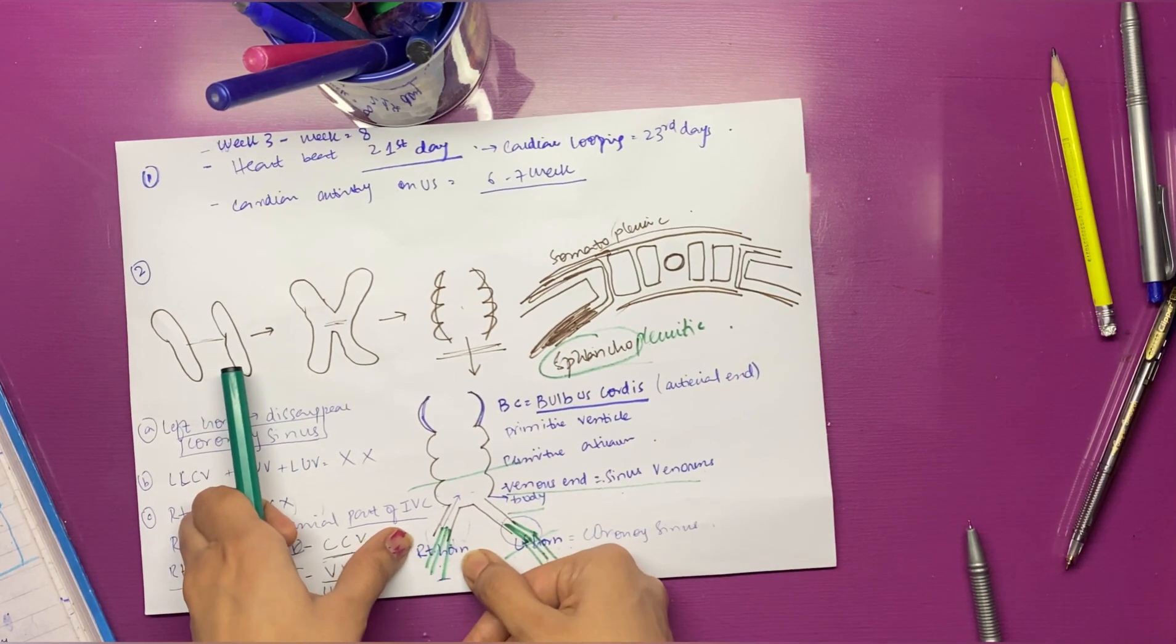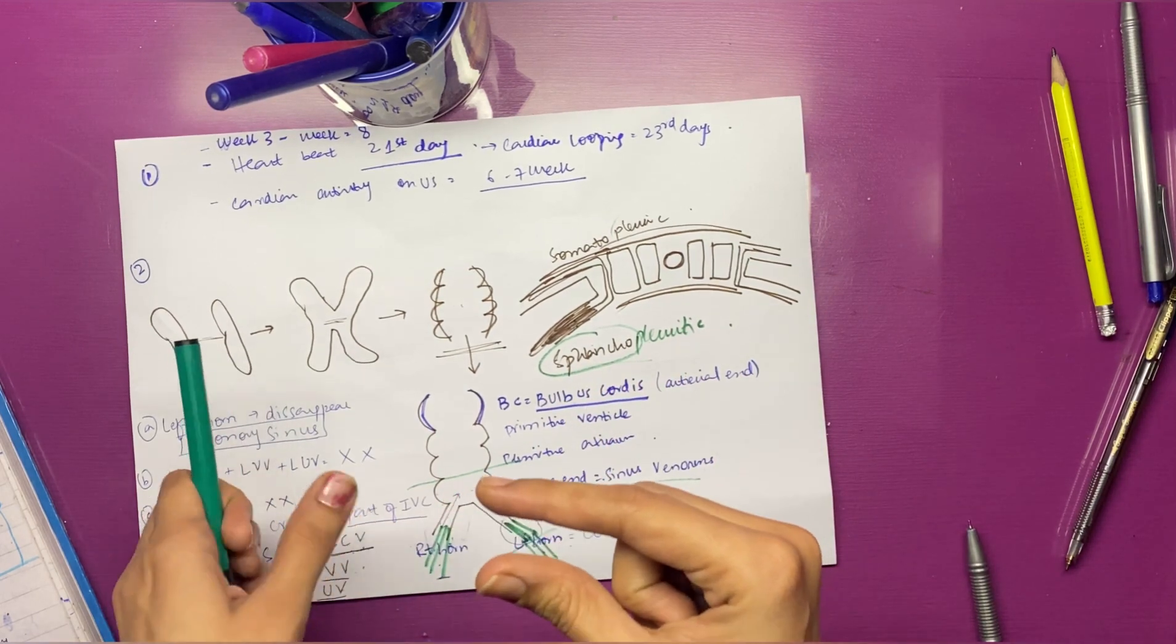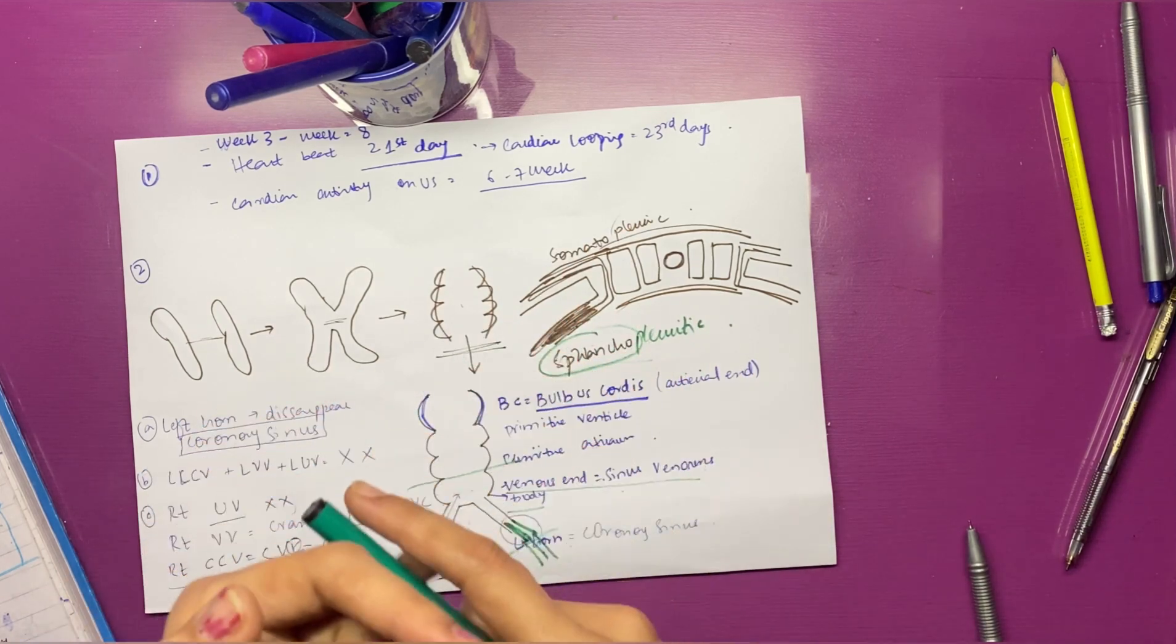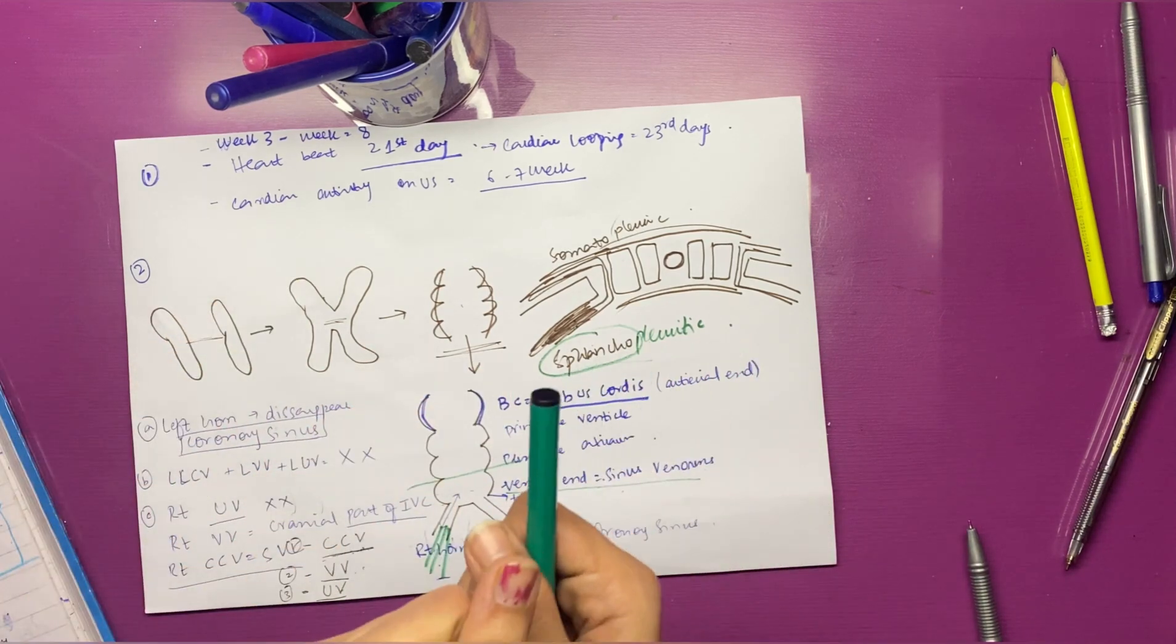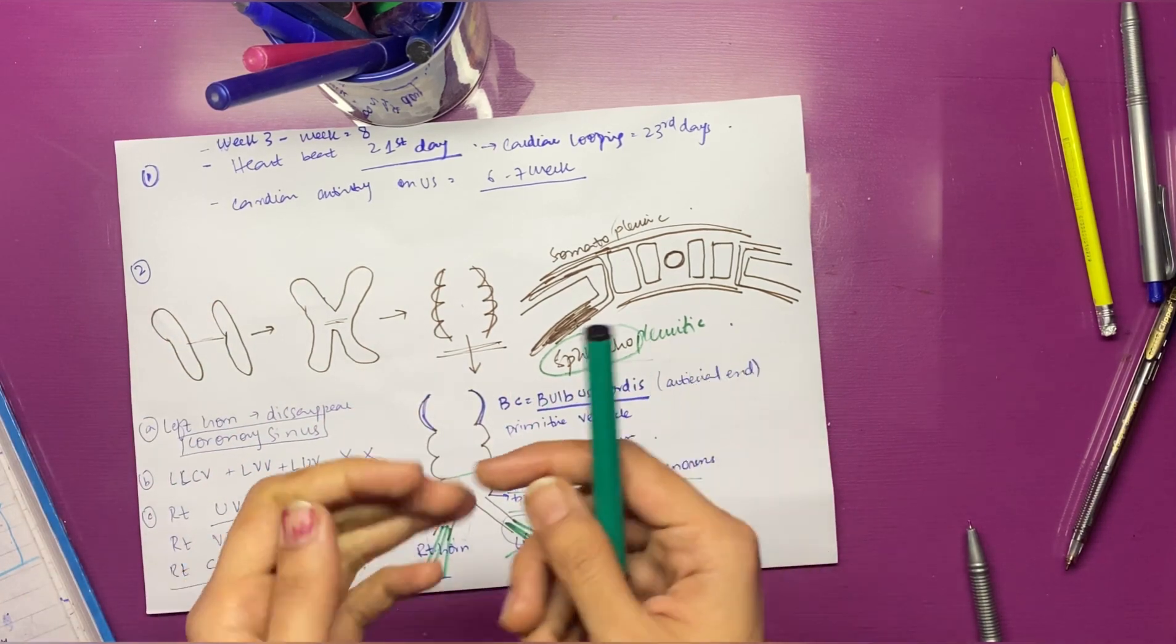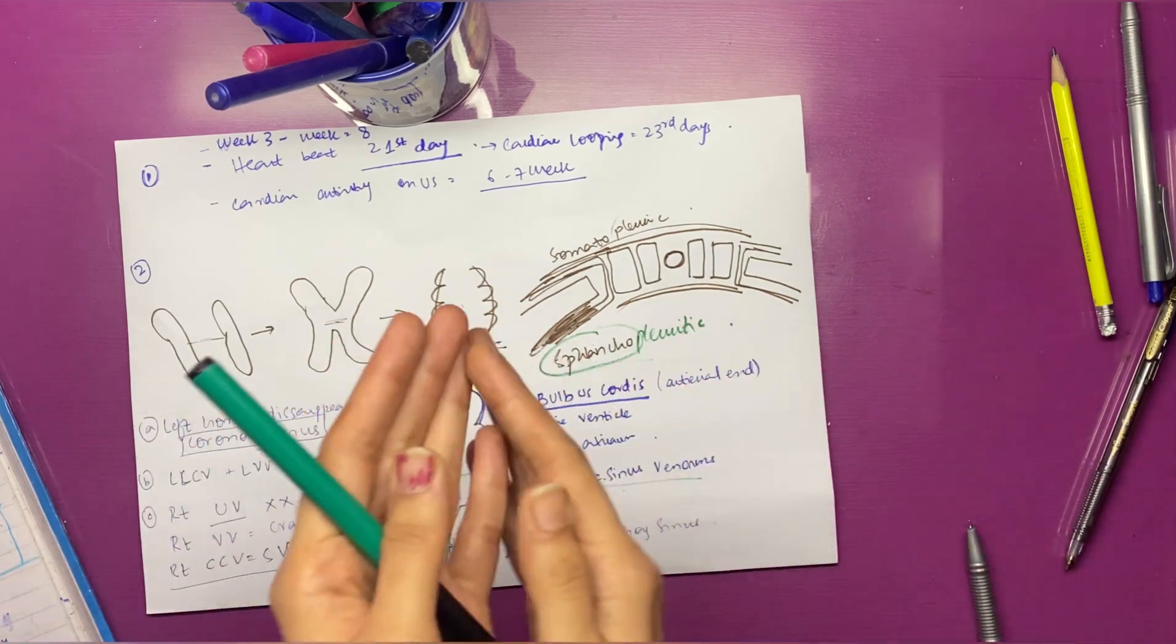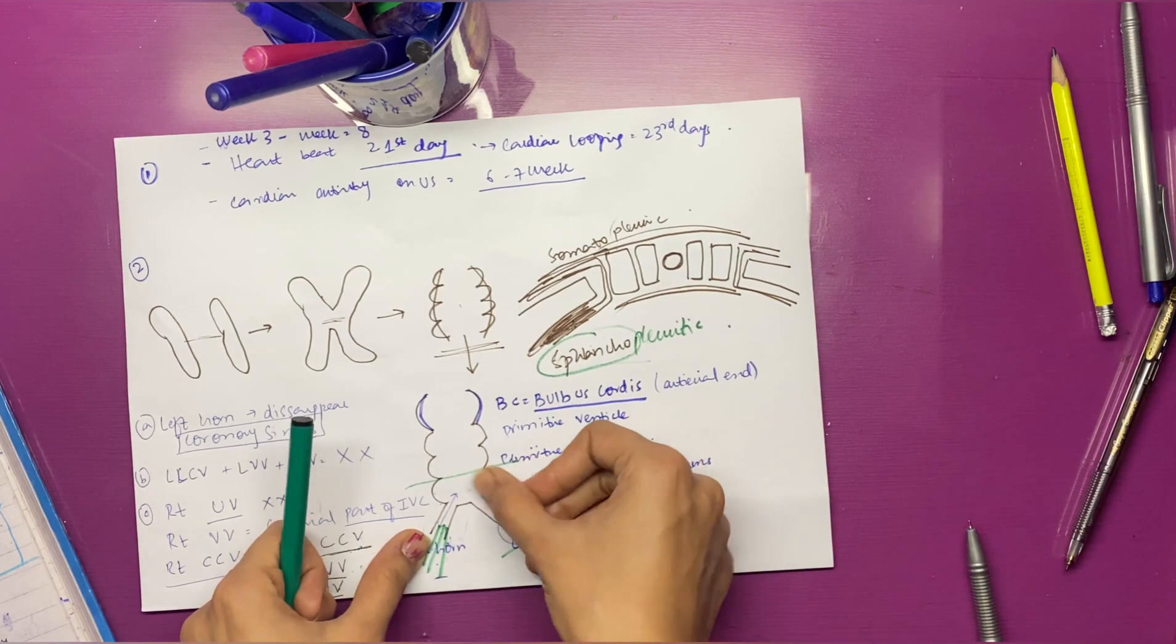Now what happens to the right horn? The right horn has three sets of veins again. The common cardinal vein will form the future superior vena cava. Then we have the vitelline vein, which is going to form the cranial part of the inferior vena cava. The third vein, the right umbilical vein, is going to disappear, as already discussed.